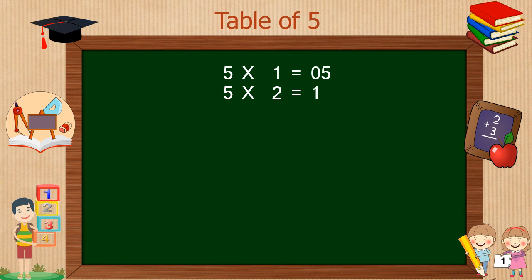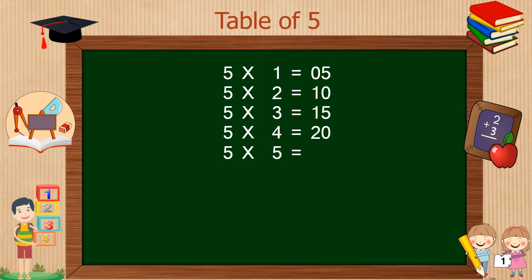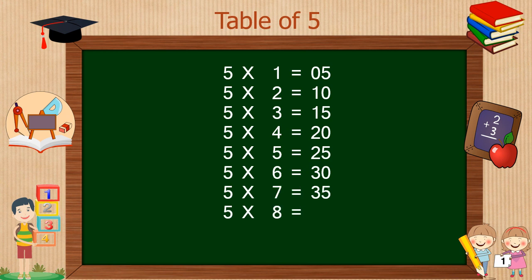Table of 5: 5 times 1 is 5, 5 times 2 is 10, 5 times 3 is 15, 5 times 4 is 20, 5 times 5 is 25, 5 times 6 is 30, 5 times 7 is 35, 5 times 8 is 40, 5 times 9 is 45, 5 times 10 is 50.